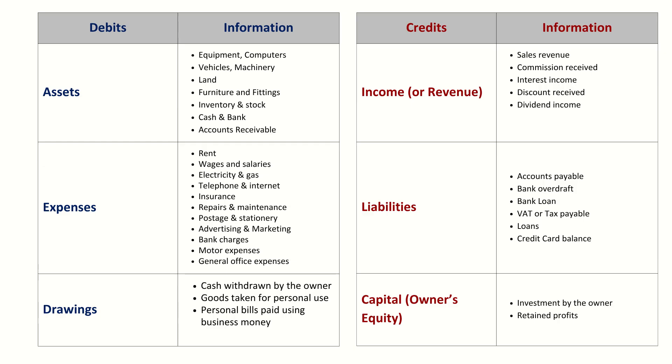In summary: debit increases assets, expenses, and drawings. Credit increases income, liabilities, and capital. Remember, every debit must have an equal credit so that the books always stay in balance.